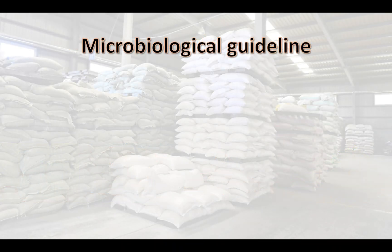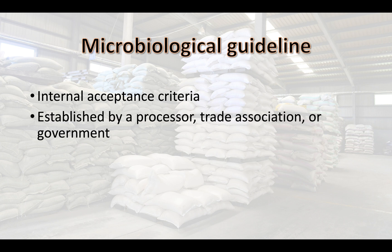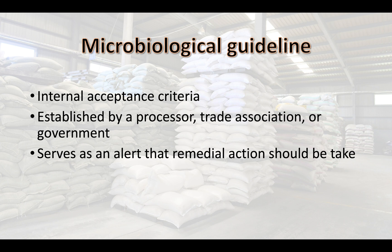Microbial guidelines are internal acceptance criteria established by a processor or trade organization. For example, yogurt has a requirement established by the National Yogurt Association for labeling a yogurt product as containing live and active cultures. This microbial guideline for yogurt is 100 million active cultures per gram of yogurt.